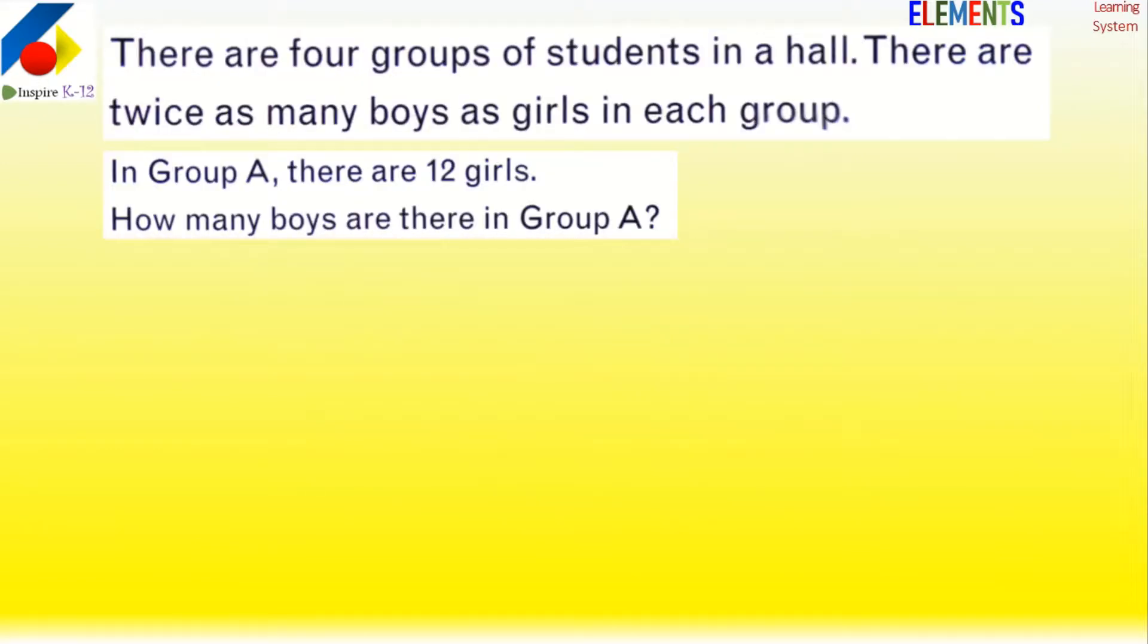There are four groups of students in a hall, and there are twice as many boys as girls in each group. Typically x equals 2y. In Group A there are 12 girls. How many boys are there in Group A?